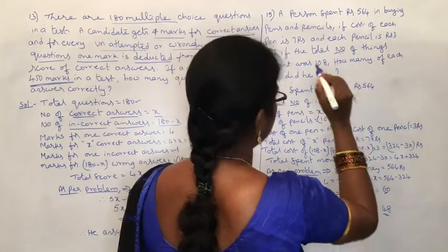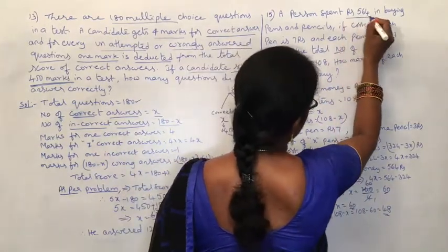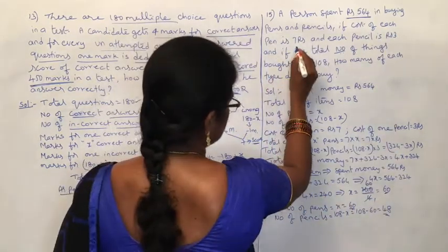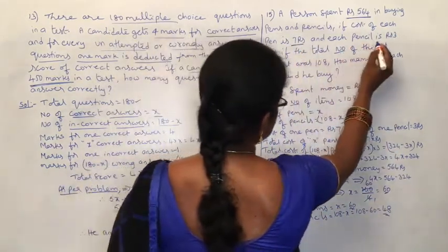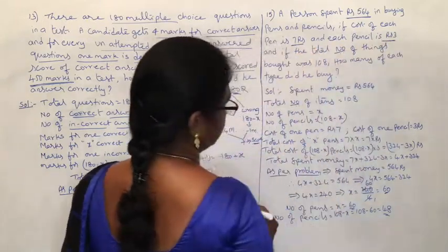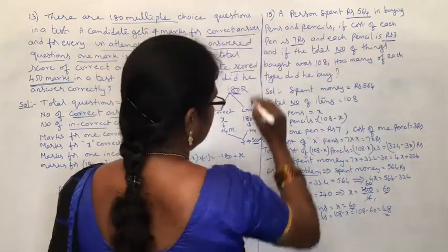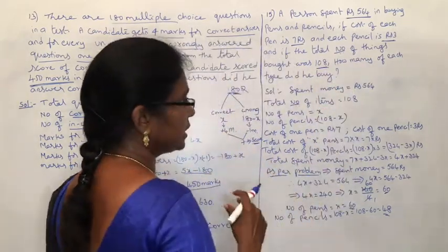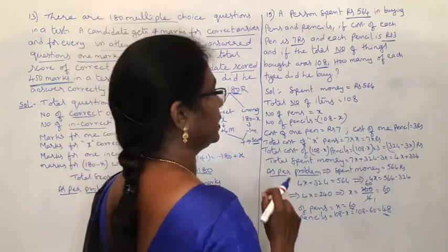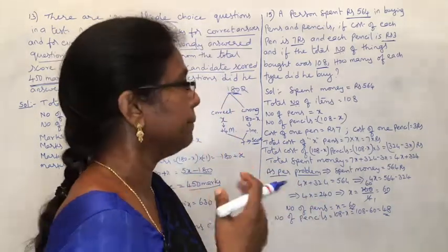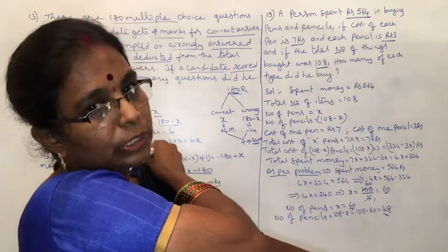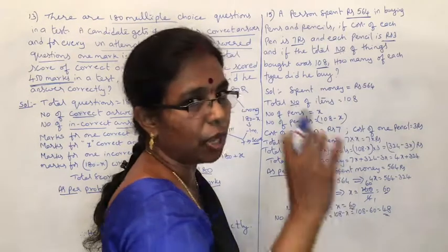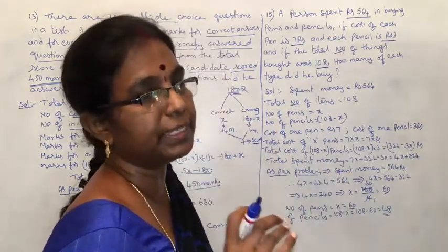Next problem: A person spent 564 rupees buying pens and pencils. Each pen costs 7 rupees and each pencil costs 3 rupees. The total number of items bought was 108 — that is, number of pens plus number of pencils equals 108. We need to find how many pens and how many pencils he bought.